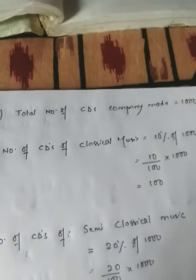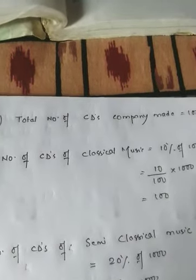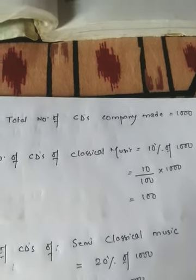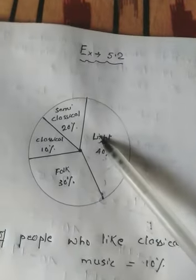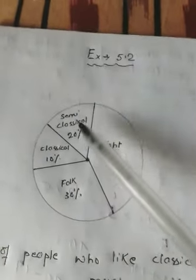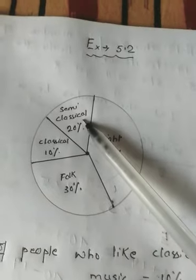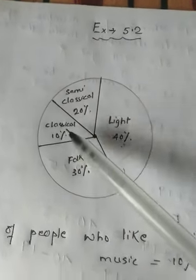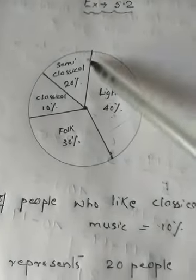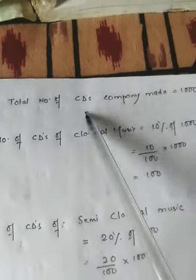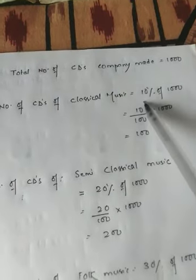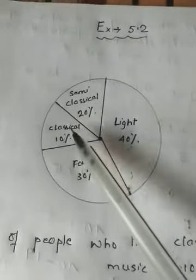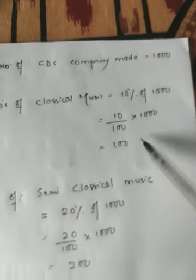In question number three, suppose a cassette company were to make 1000 CDs — how many of each type would they make? So the total number of CDs the company makes is 1000. The number of CDs of classical music is 10 percent, according to the pie chart. So 10 percent of 1000 is 100 CDs of classical music.